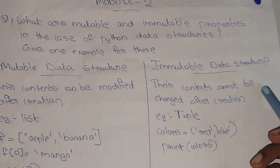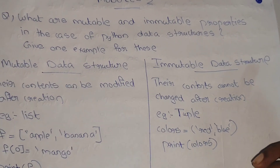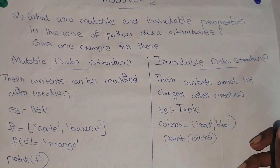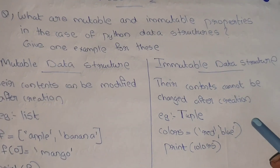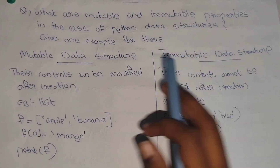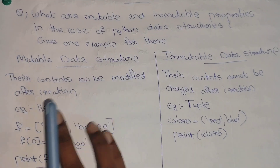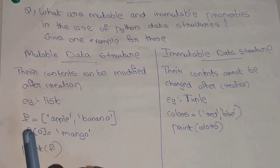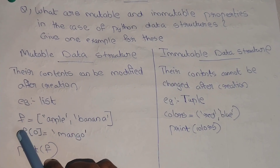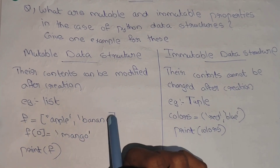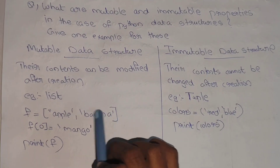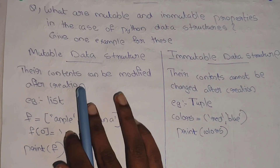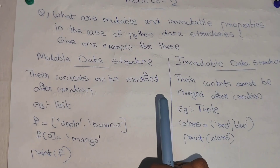An example of a mutable data structure is a list. You can have a variable — for example, fruits equal to Apple, Banana, and other items.